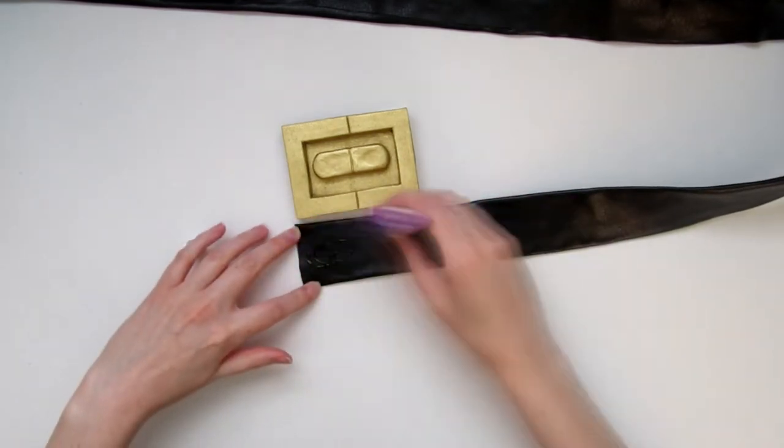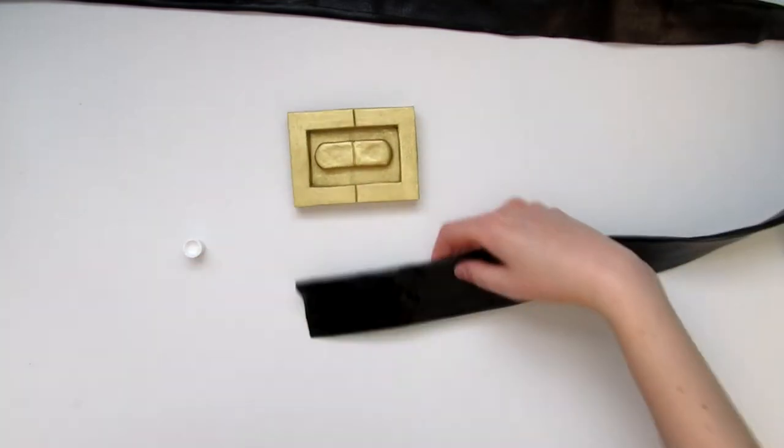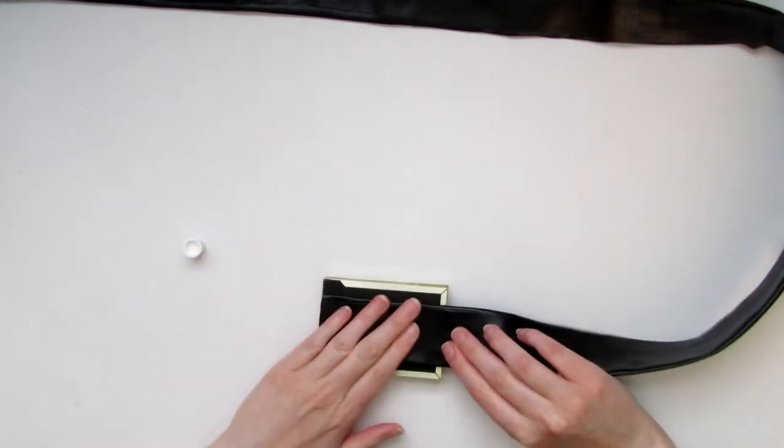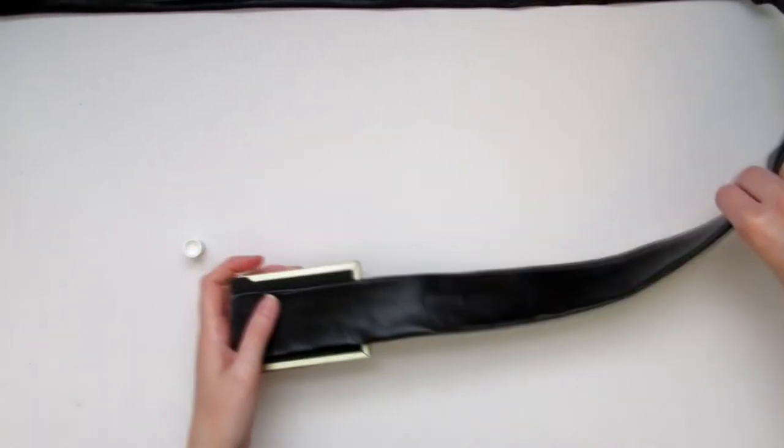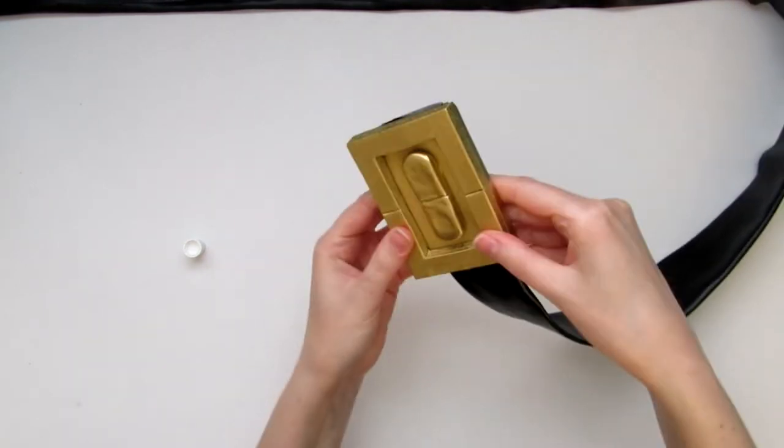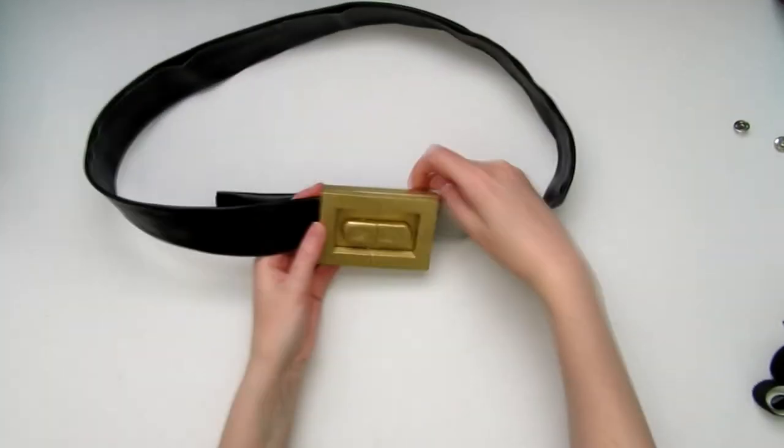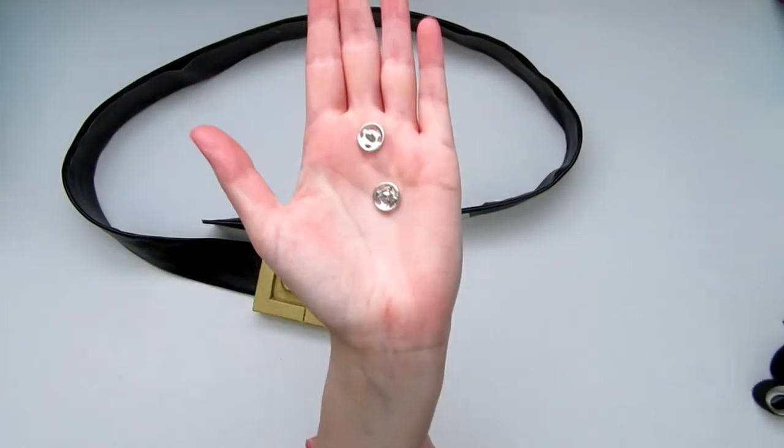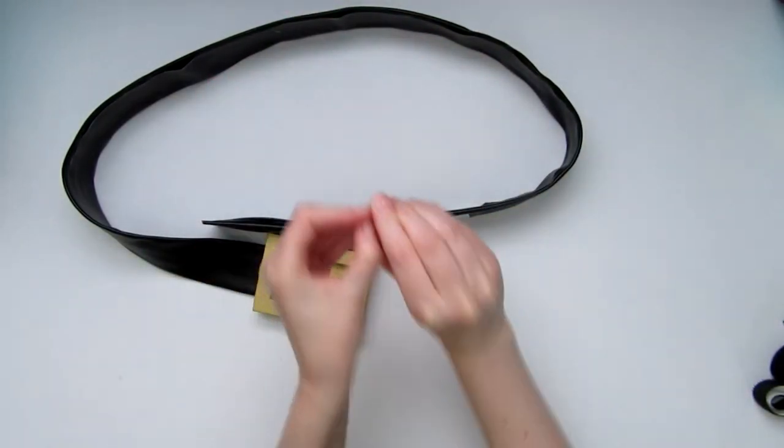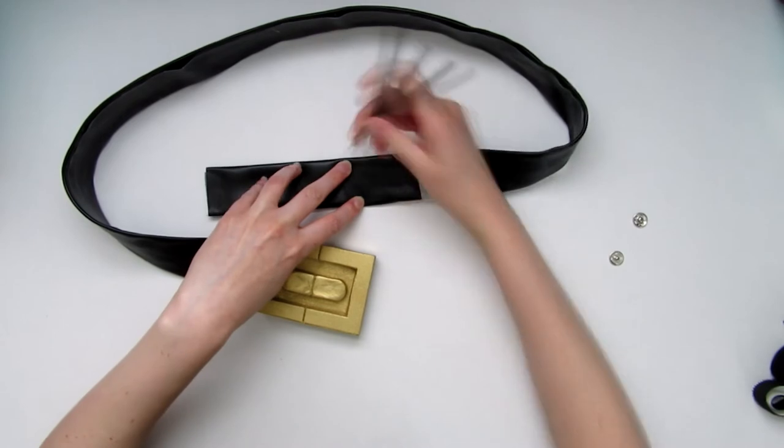Glue the fake buckle onto your belt. As you can see, I marked off where the overlap is when it sits on my hips, then attach a small snap closure so that the belt will stay closed. I wound up using some Velcro later on as well.